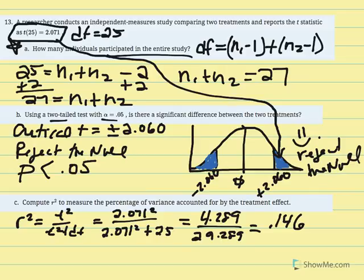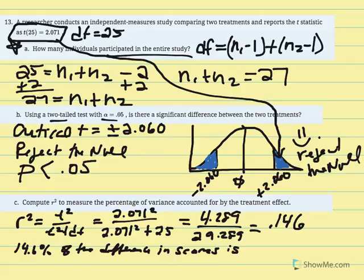What does 0.146 mean? In this case, 14.6% of the difference in scores is due to treatment. If we had the sample mean difference, we could say that 14.6% of that difference is a result of the two groups receiving different treatments.